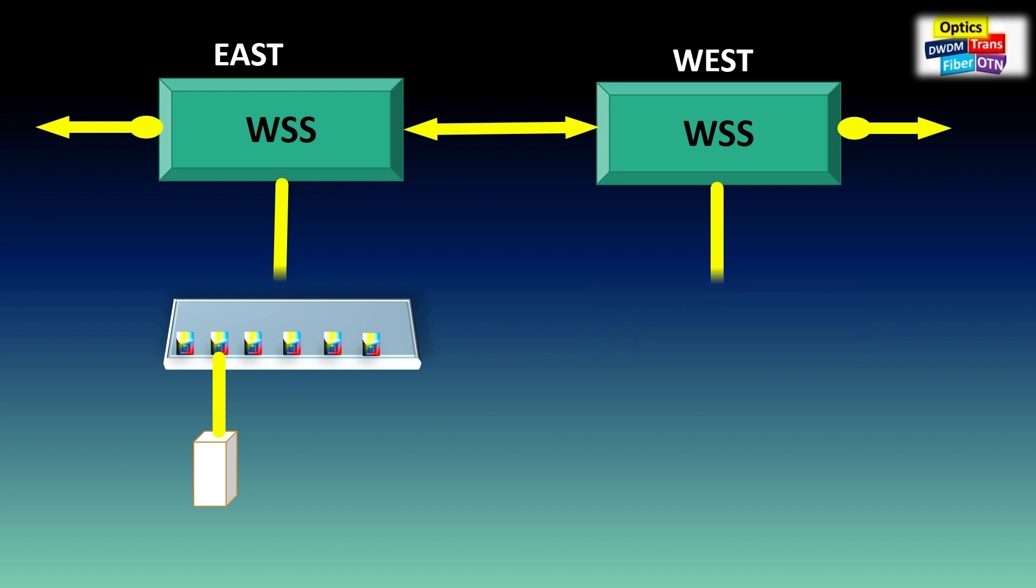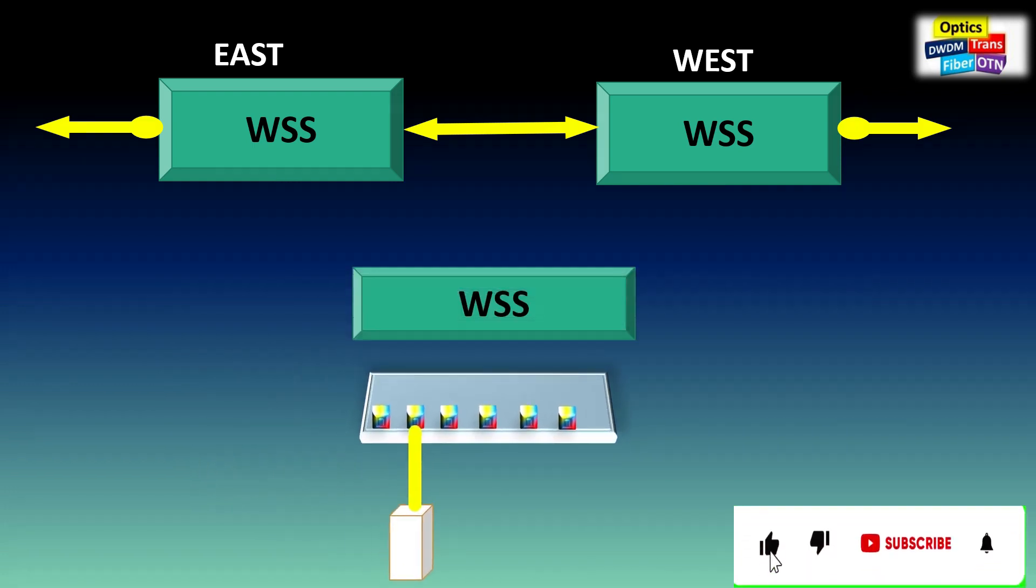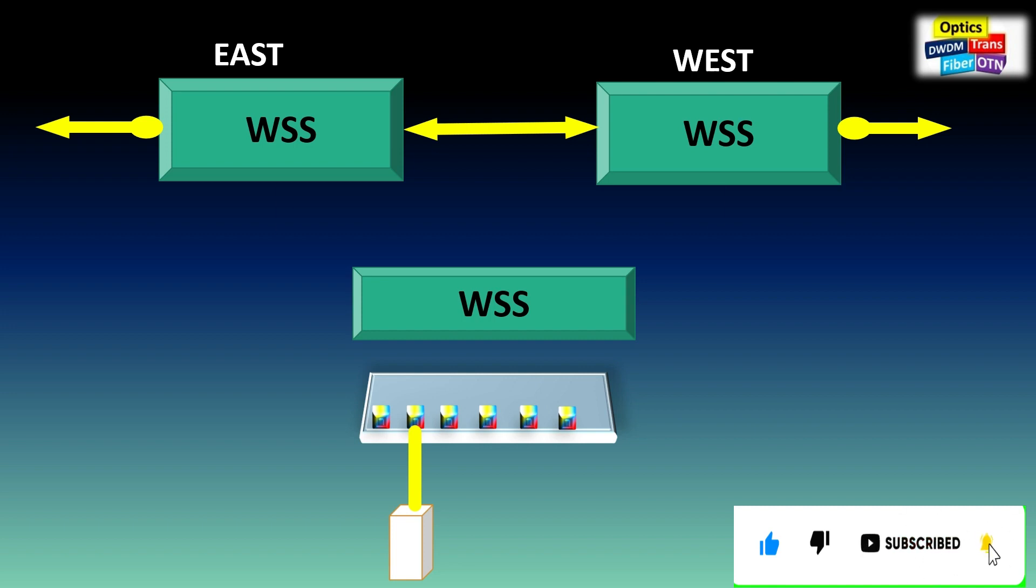To make it directionless, add one more WSS in add-drop and connect with existing WSS ports. This new WSS signal in-out port connects with the multiplexer.